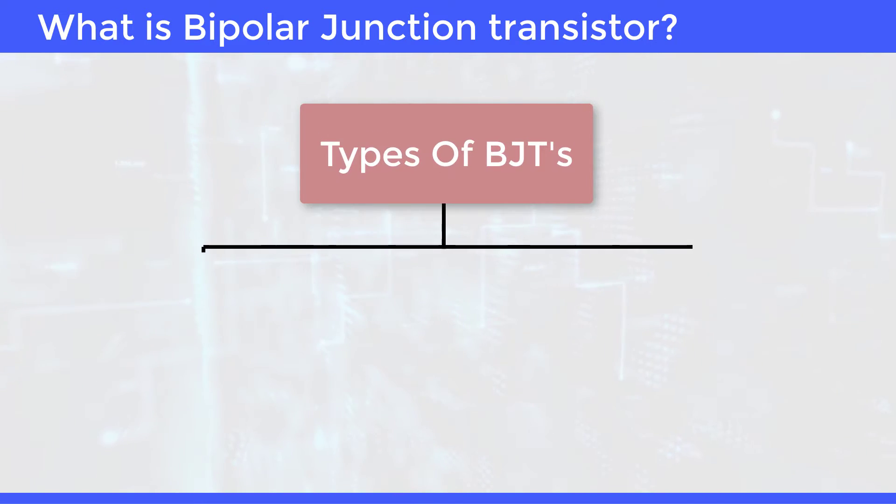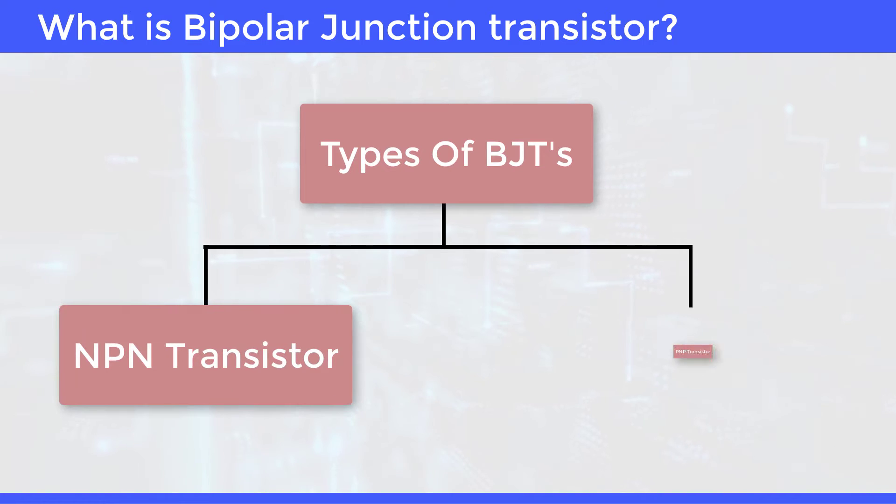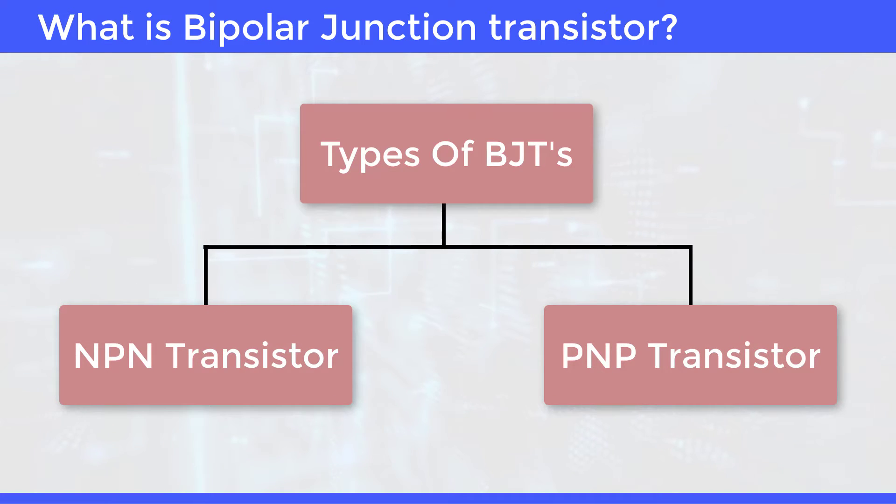Types of BJT are as follows: NPN Transistor and PNP Transistor.